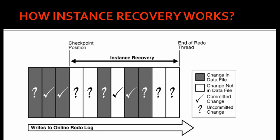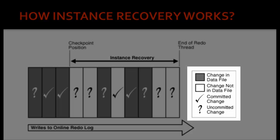Let us assume the database is still up and running. All the gray boxes indicate a change in the data file, meaning something has been changed in the data file. The next symbol is change not in the data file, which means the change has occurred but has not been made permanent to the data files. The tick marks represent committed changes and the question marks represent uncommitted changes — ones which are not committed.